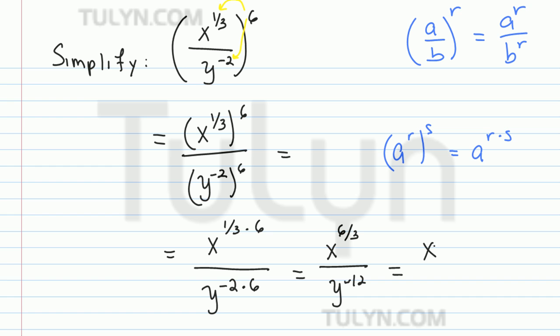And then simplifying, this becomes x squared over y to the negative 12.